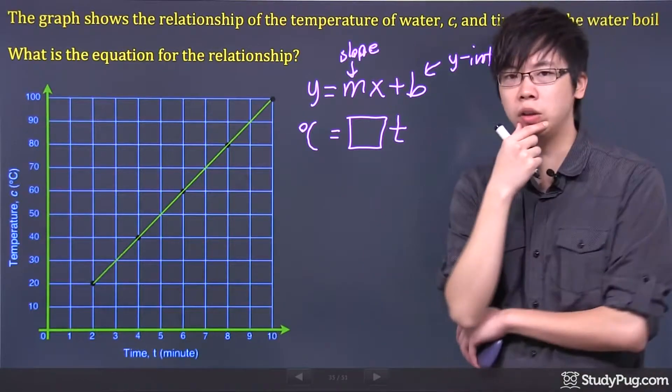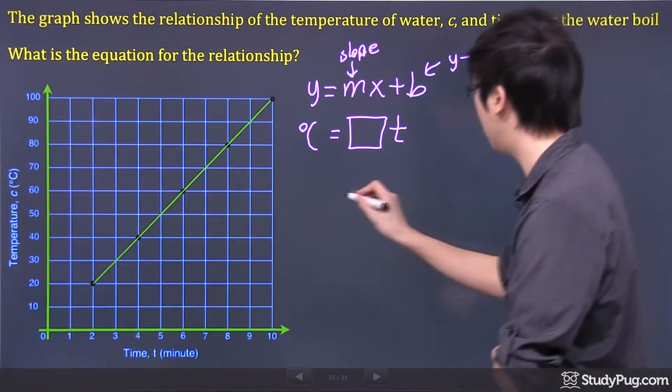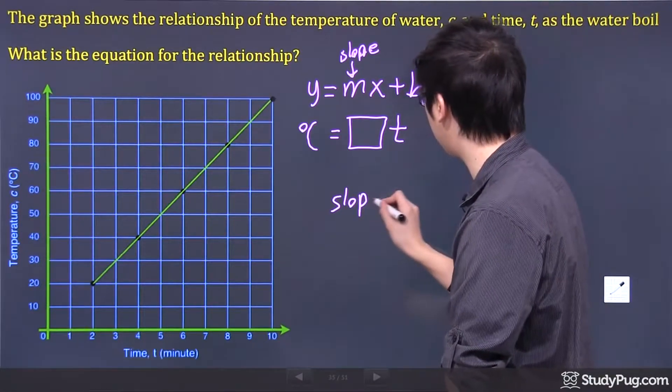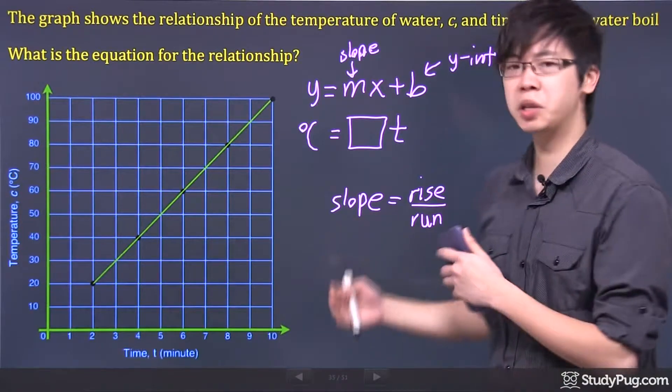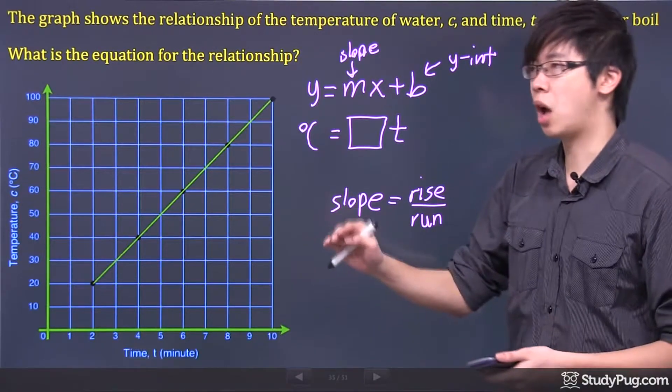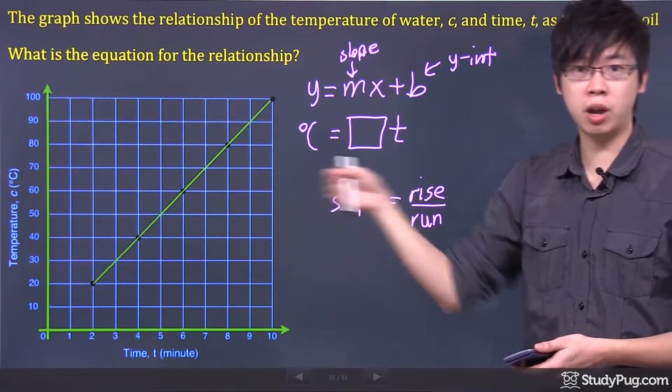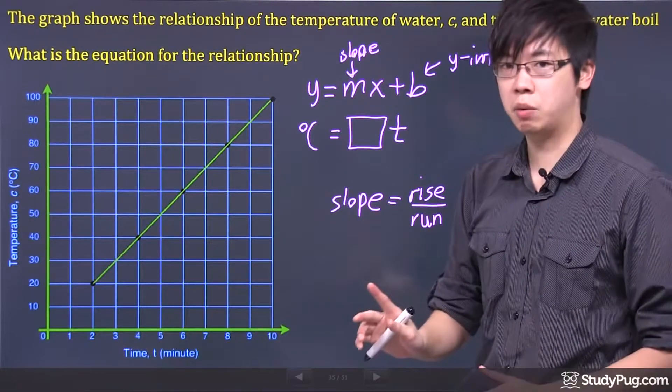But the problem is, how do you find the slope? Well remember, you might want to learn it right now. The slope is equal to the rise over run. It's basically how the graph behaves, going up first and then left or right. Now, this is how we do it.